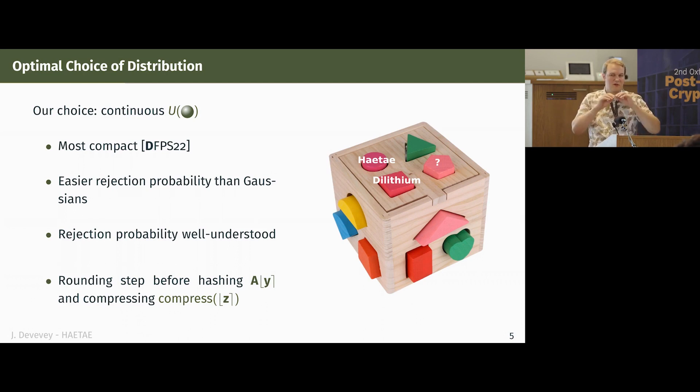So Dilithium for P and Q, they instantiated it with discrete hypercubes, and our choice is the continuous uniform distributions over hyperballs. So why is that? This is because you can show that this is the most compact distribution you can get, you can use for signatures, and it's actually a tie with Gaussian distributions. So it may be a bit surprising that we don't go for Gaussian distributions, but you'll see that the rejection probability step is much easier with those hyperballs than with Gaussian distributions, where you have some transcendental function to evaluate at a point which depends from the secret, making it very hard to get a constant time implementation of it.